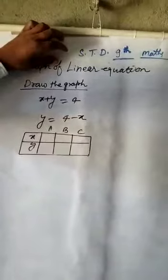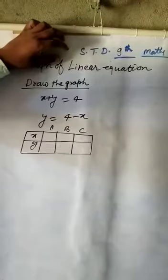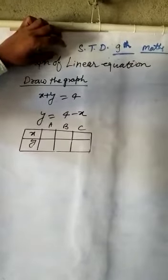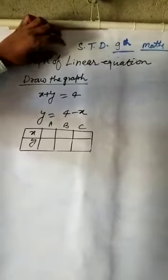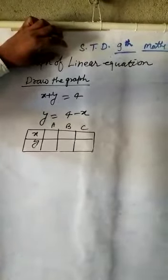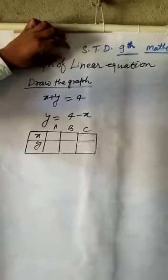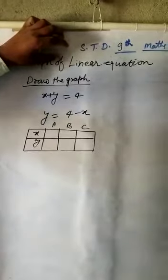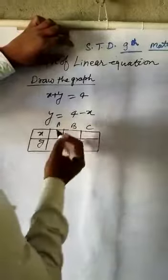Here x is free variable and y is dependent variable. y depends on x. So put the value of x equal to 0 plus minus 1, plus minus 2, plus minus 3 and so on.